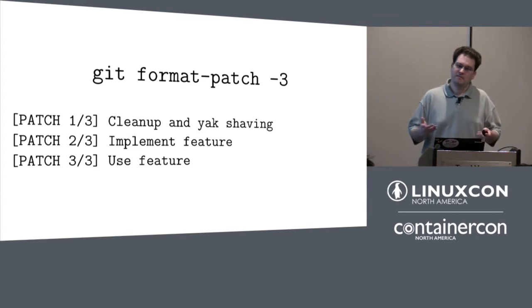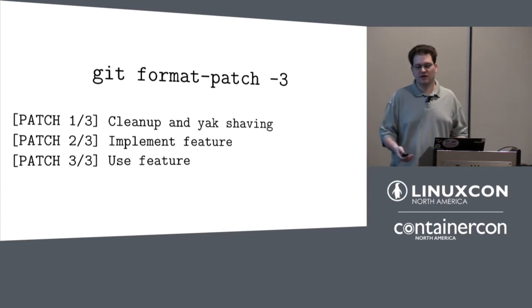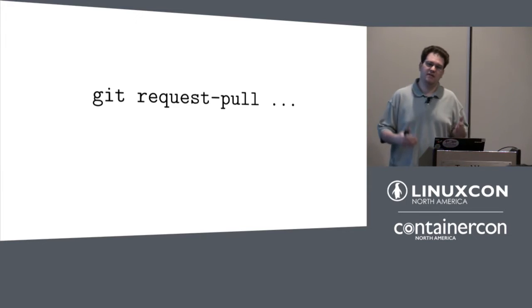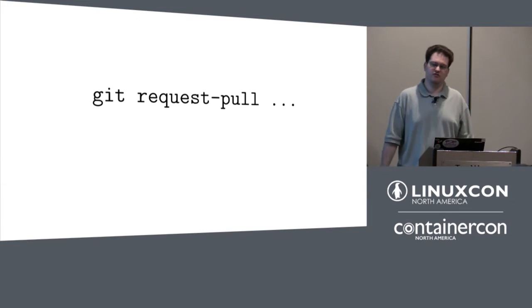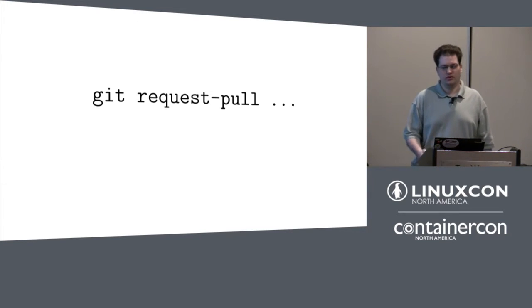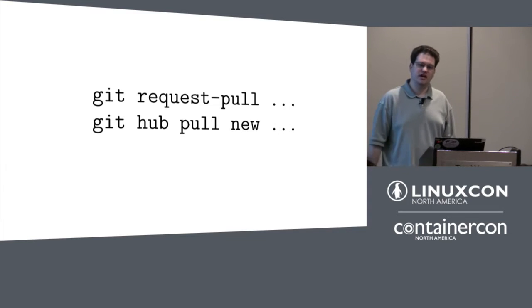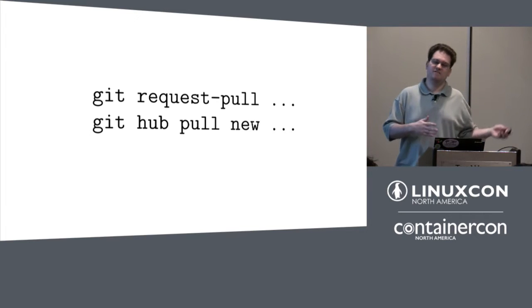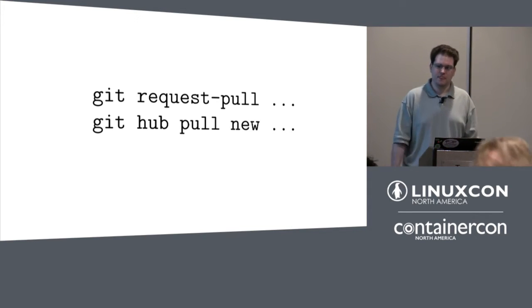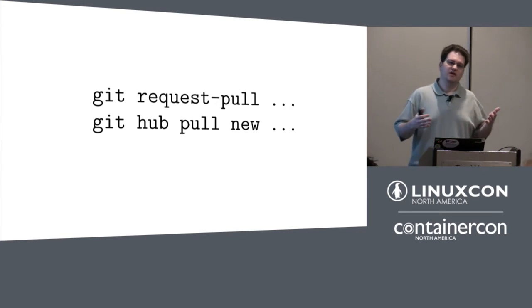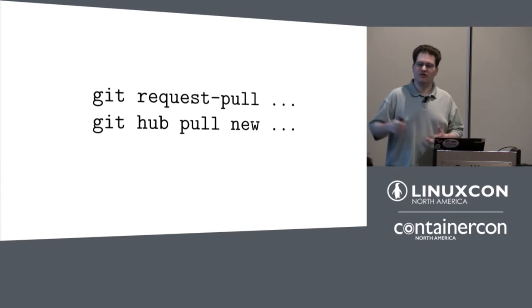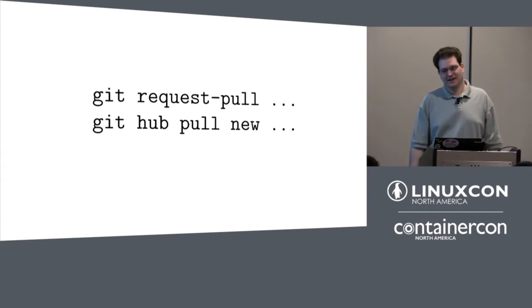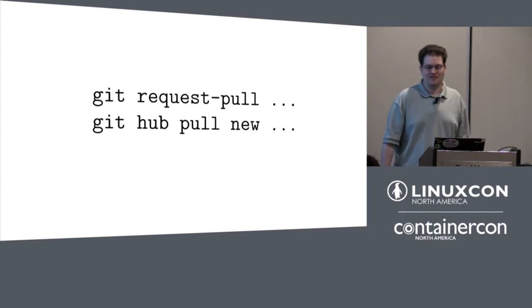Format-patch isn't the only way you could collaborate. You could also use git request-pull to send a please-pull from a tree you've pushed publicly, or create a pull request on GitHub, GitLab, Gerrit, or any number of tools. But at the end of the day, you have a stack of patches and you want to get them upstream. Naturally, those patches are perfect and flawless on the first try and get accepted with no further feedback, right? Most of the time, not so much.